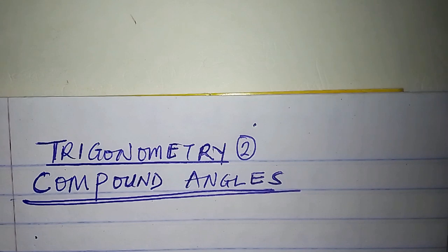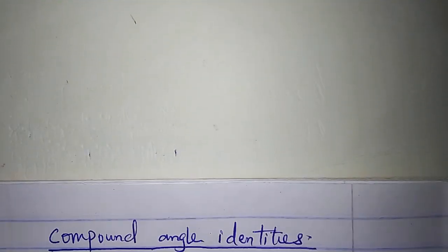Still on trigonometry, but this time around we'll talk about compound angle identities. Watch the video to the end and see the identities for the sine, cosine, and tangent of a sum and of a difference.